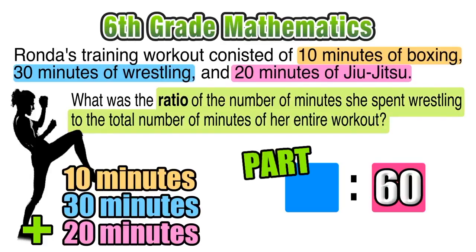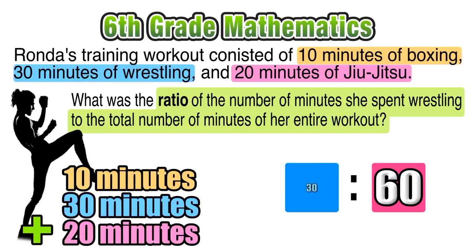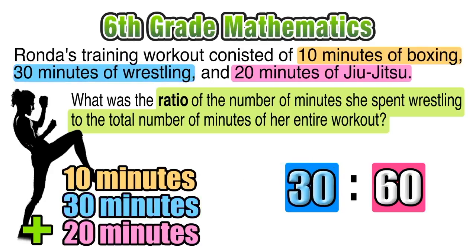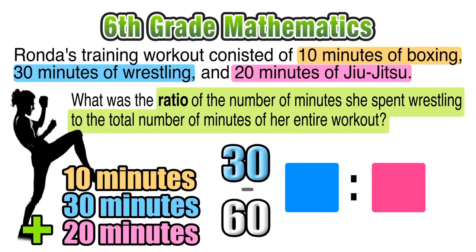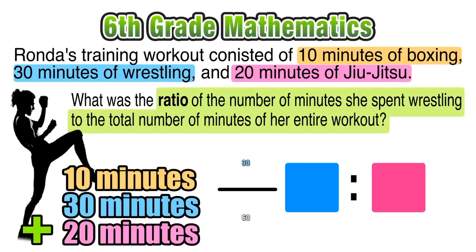We want to find the ratio of how many minutes she spent wrestling compared to her entire workout. We know that she spent 30 minutes training wrestling, so now we have our ratio of 30 to 60. We can think of this as a fraction, and when we look at it this way, it's pretty easy to identify that 30 over 60 can be simplified.